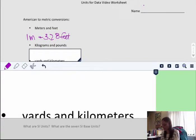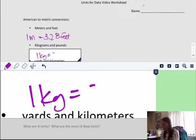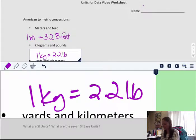Kilograms and pounds. In one kilogram, there are 2.2 pounds. So if you take your weight and cut it in half, that's about what it is in kilograms.